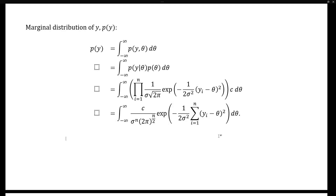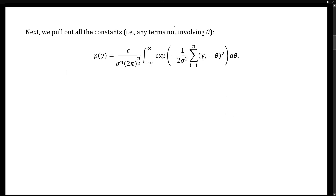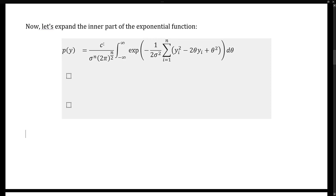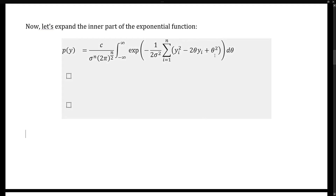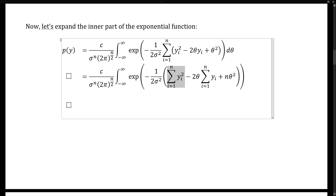Anything not involving theta is a constant, so we can move those terms outside the integral. That leaves us with the simplified expression here. Next, we're going to expand the square term inside the exponential function. That leaves us with the expanded expression here. If we distribute these terms over the sum, we're left with the expression here. Then, we once again pull out any terms not involving theta — in this case, the part of the exponential function involving the sum of yi squared — leading us to the new expression here.